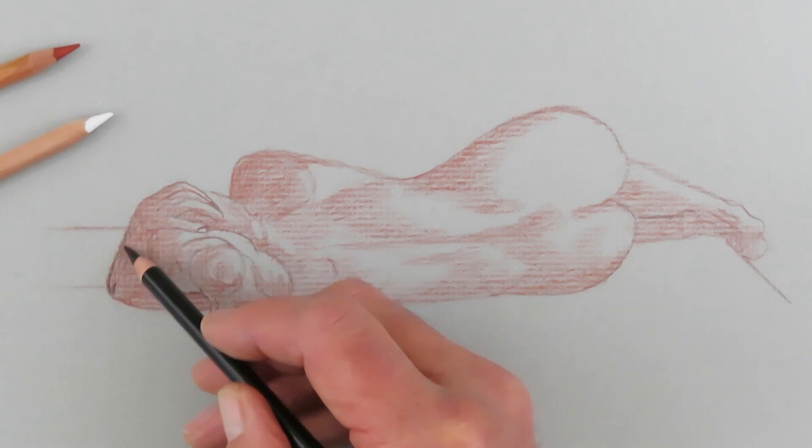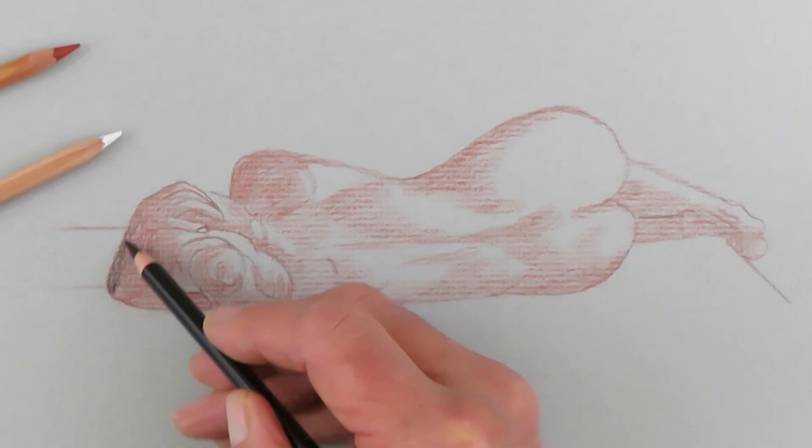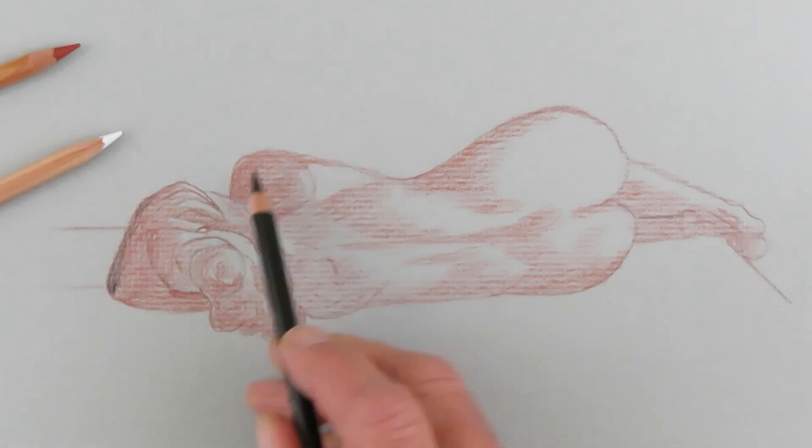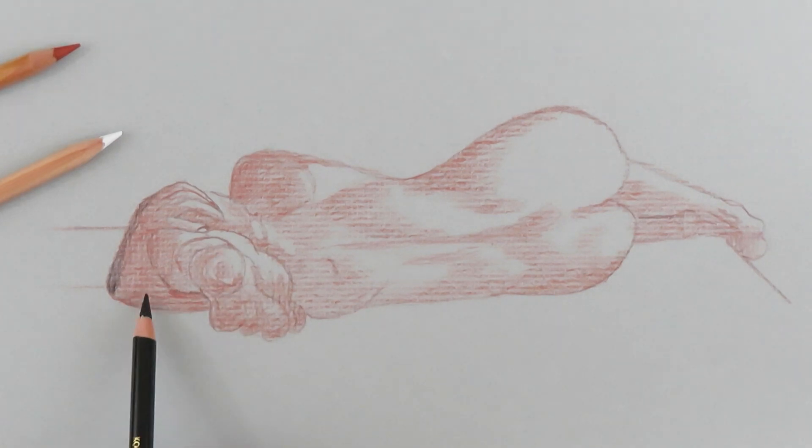So we're going to begin by working in our darkest shadow areas. And again, it's the darkest shadow areas. We already have the red chalk as one part of the shadow. And so we'll begin to add in.